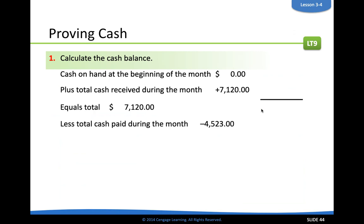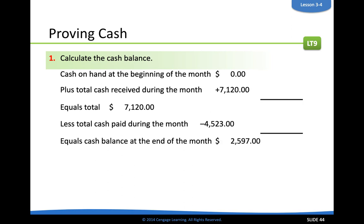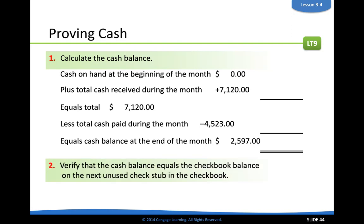$7,120 minus the credits that lowered our cash balance equals $2,597. Double-rule that, meaning that's the total — that's how much cash should still be in the bank. If Delgado Web Services were to check their checking account statement, it should say $2,597.